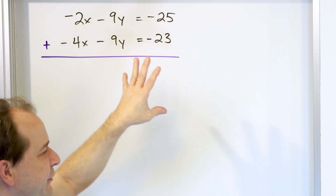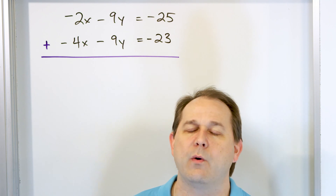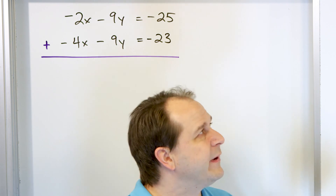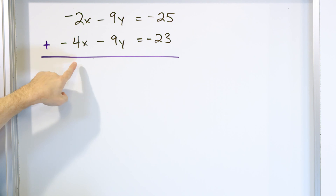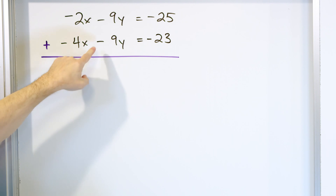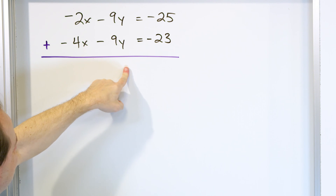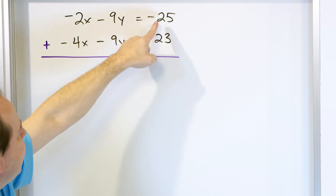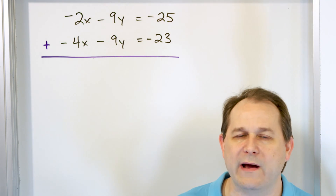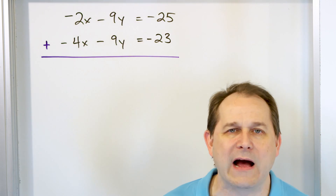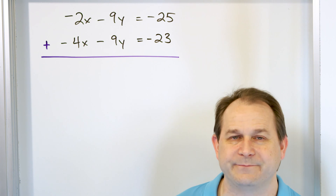So if you try to add these straight away, you will get a new equation that is valid, but it won't help you. You'll have negative 6x added to negative 18y, and then a number on the other side. You will have a new equation that still has x's and y's, and you can't do anything with it. What do we do?